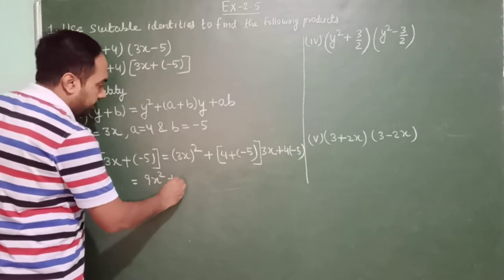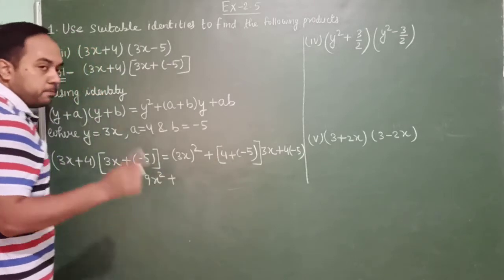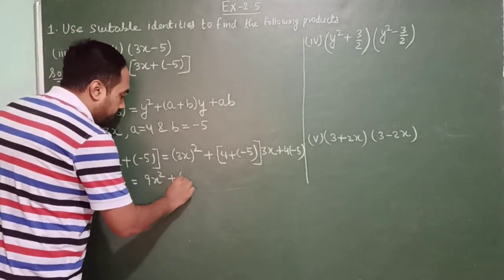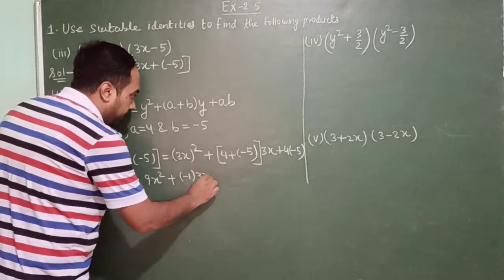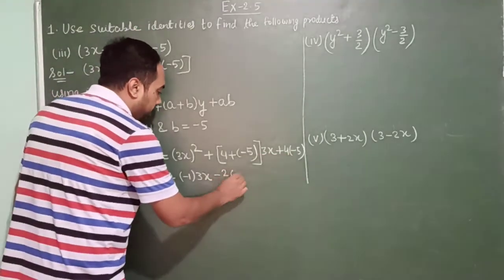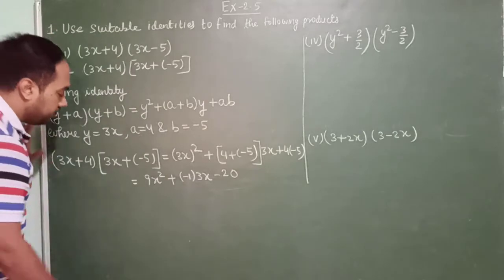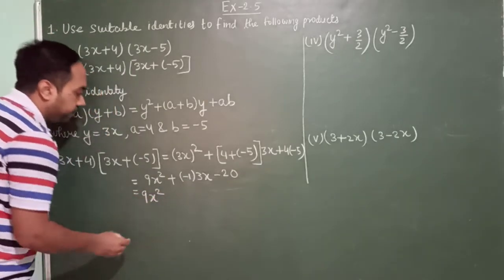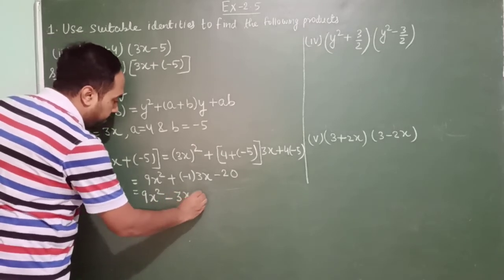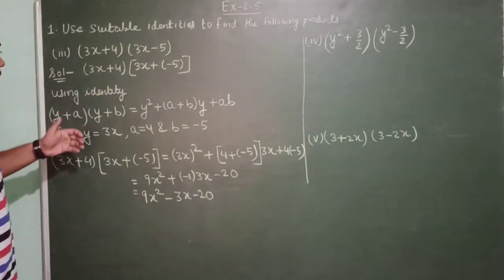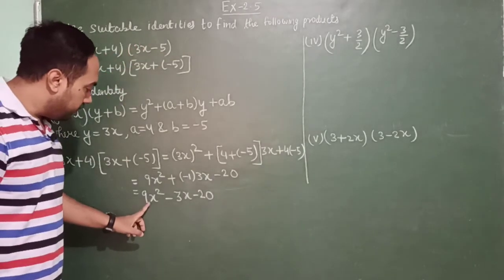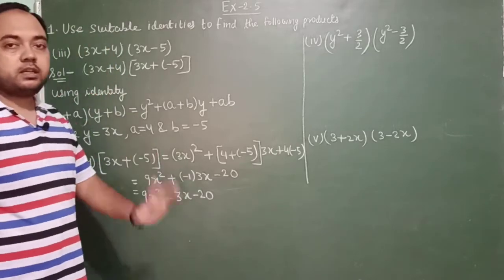Applying the identity with y = 3x, a = 4, b = −5: (3x)² plus (4 + (−5)) times 3x plus 4 times (−5), which gives 9x squared minus 1 times 3x minus 20, that is 9x squared minus 3x minus 20. This is the product of (3x + 4) into (3x − 5).